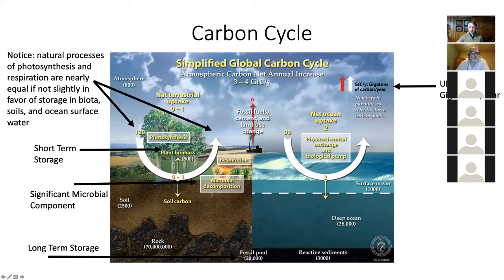The flux into soil and plant biomass is relevant here, but plant biomass is very transient — plants live, die, get eaten, and get respired. Where we've got to try and lock more carbon up is down in the geologic system.